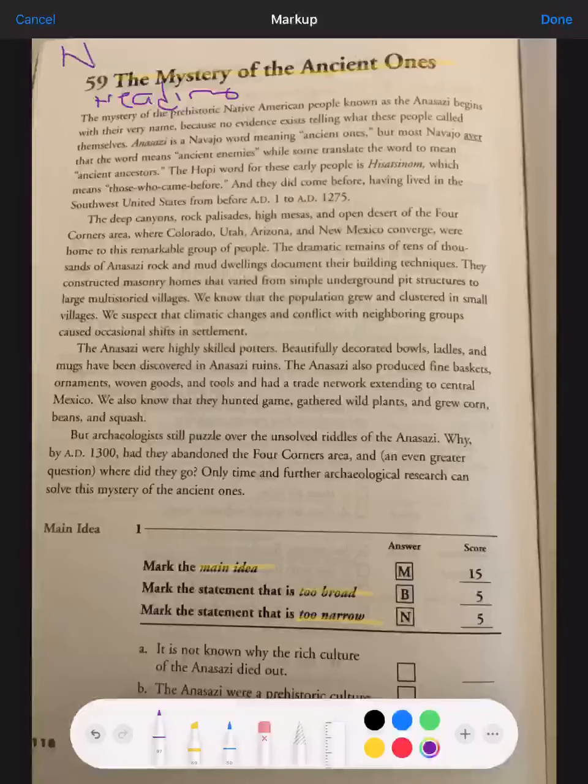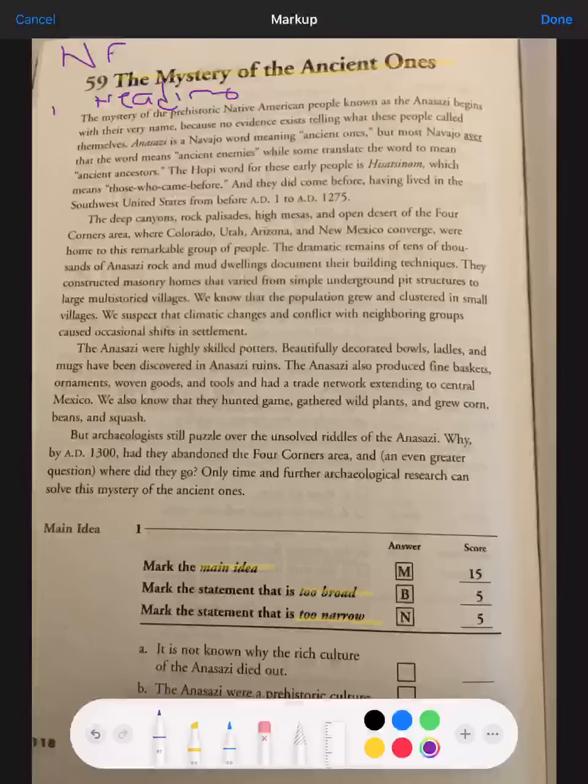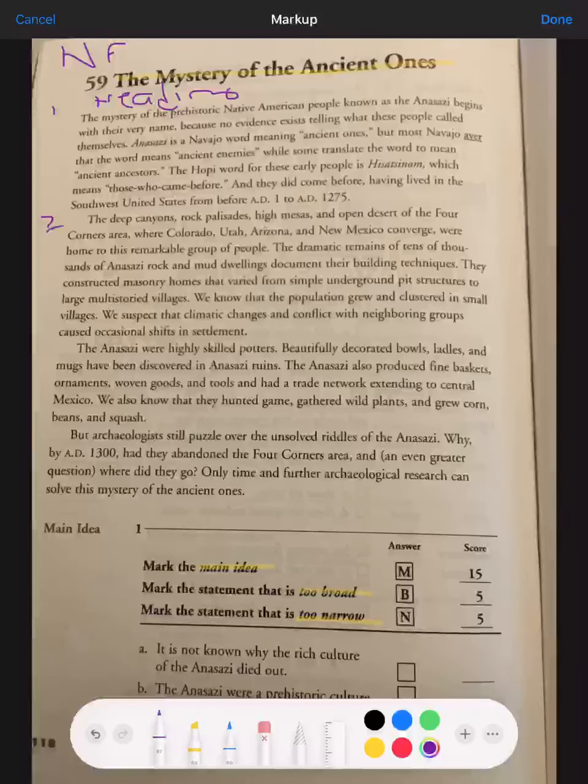we'll highlight The Mystery of the Ancient Ones and we can label that as our heading. And this is a non-fiction piece. And let's go on and number our paragraphs. This is sad looking three.